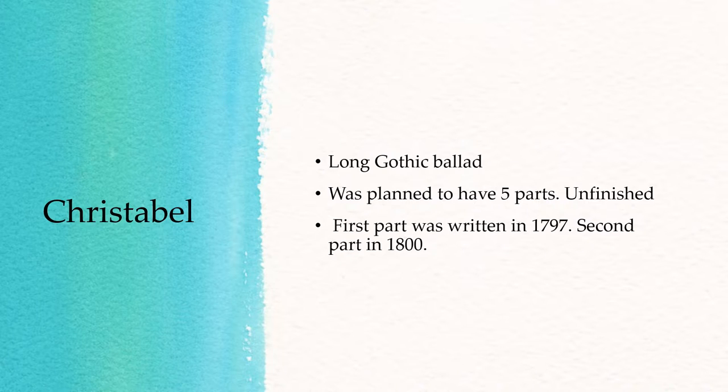The first part of the poem was written in 1797 and Coleridge wanted this poem to be a part of the Lyrical Ballads, the book that he produced in collaboration with William Wordsworth.